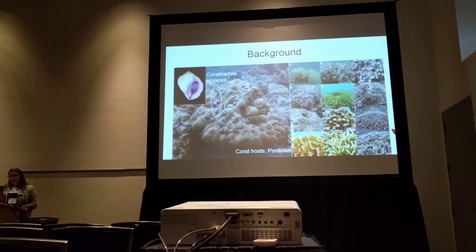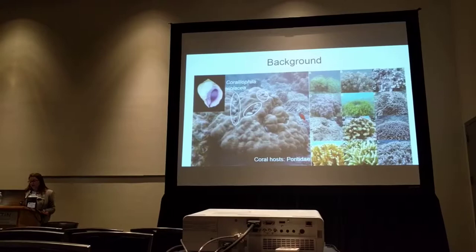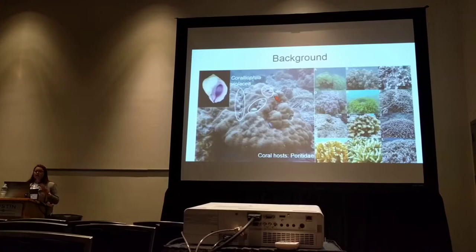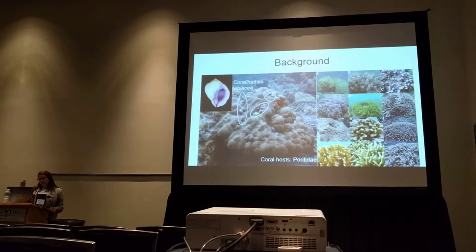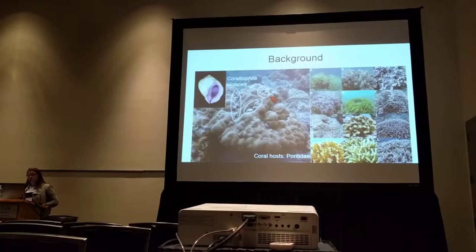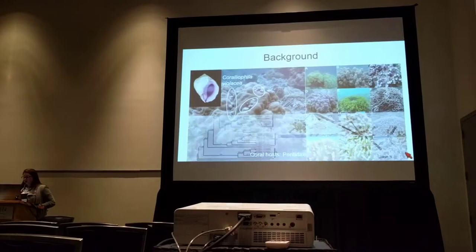A little bit of background about my study species: I work on Chorallophylla violaceae. It's an ectoparasitic snail that lives on a variety of coral hosts in the family Parytidae. Here's a picture of Parytis lobata, and I've circled where the snails are aggregating as adults. They select their host and they don't move after that. They breed with individuals on that same host and feed by sucking material that the coral sends to a wound site. They only move as larvae in the water column when they disperse after a brief period of brooding by the mother. Over here I'm showing all the different various morphologies of the coral hosts.